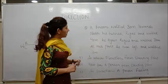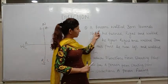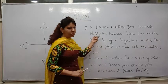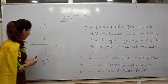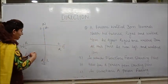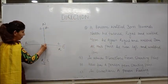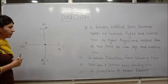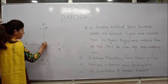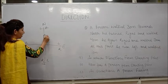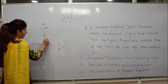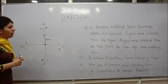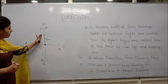The question given is: a person walked 30 meters towards north. Suppose the person is standing here. A person walked 30 meters towards north, like this.